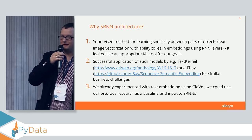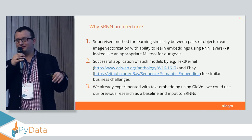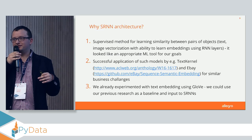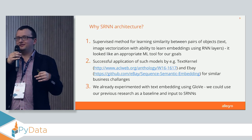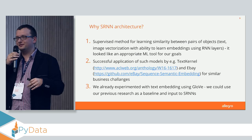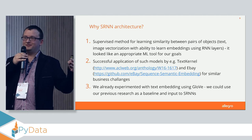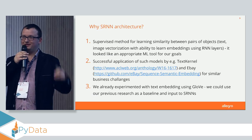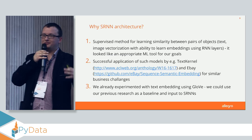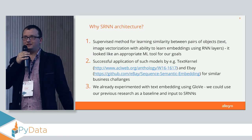The problem at Allegro is that we have many offers and sometimes don't know they are the same. For instance, in books we have many offers in different versions — the title might be 'Tolkien, Lord of the Rings', or 'Lord of the Rings by Tolkien', or 'Lord of the Rings, very cheap, shipping in 24 hours from Warsaw'. We want to cluster them together so the similarity between such objects is very high.